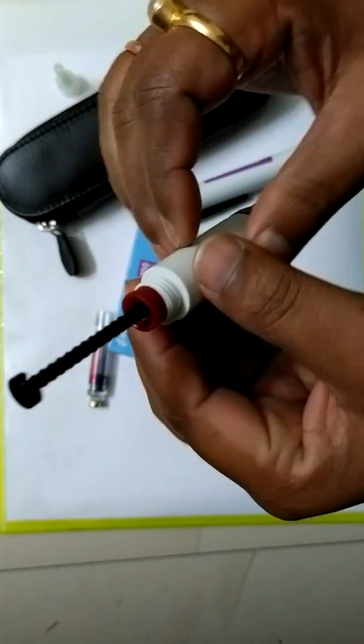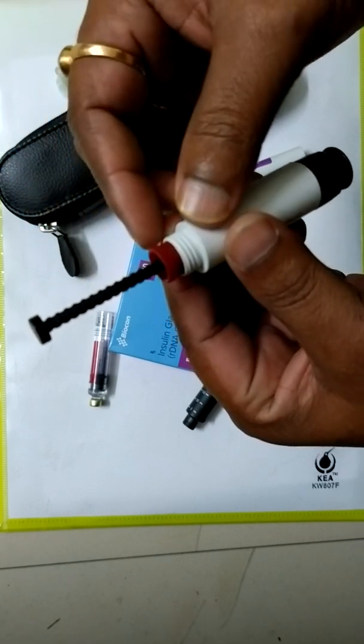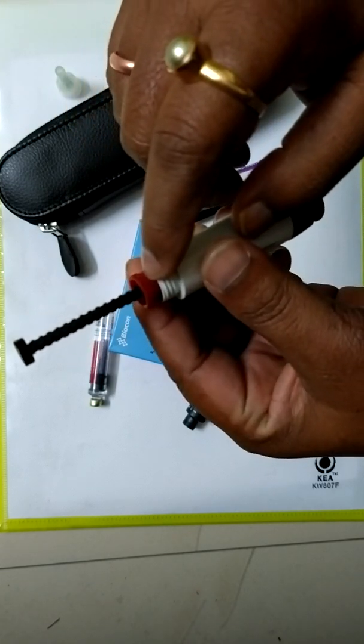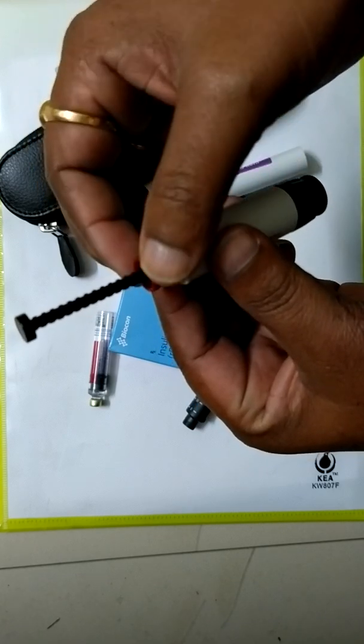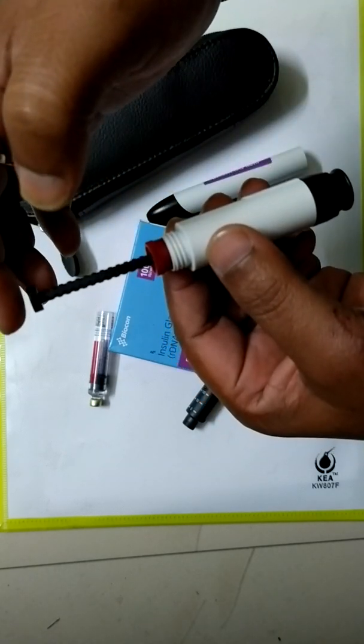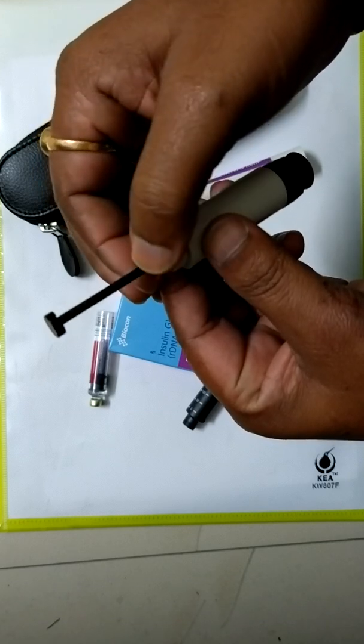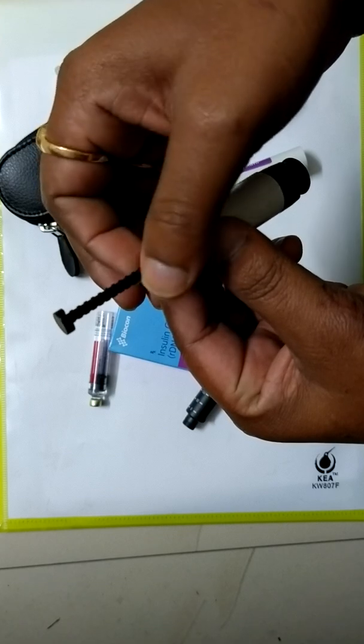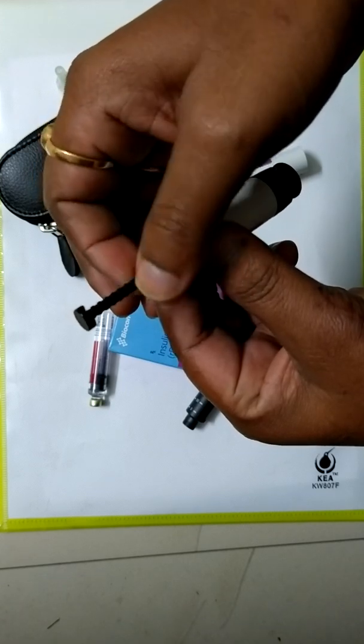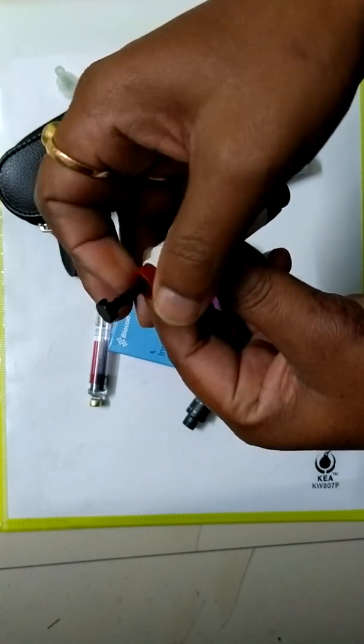Now for every time, set the plunger at the base by removing the plunger screw. Do not push the plunger head. Just remove the plunger screw. I am removing anti-clockwise and the plunger head is going down like this.